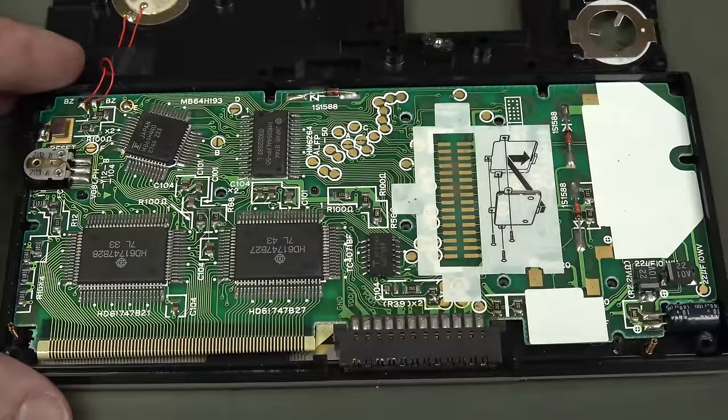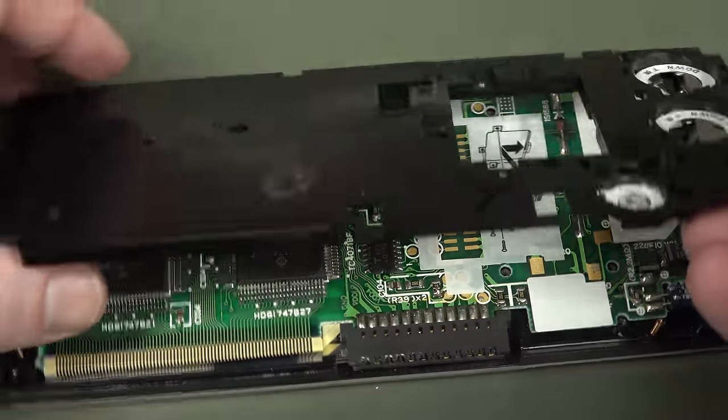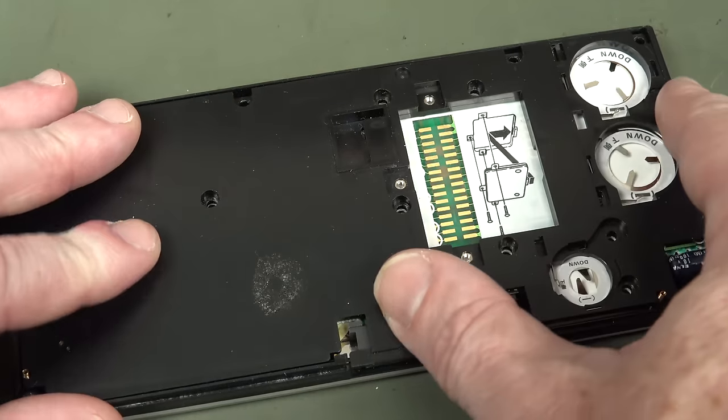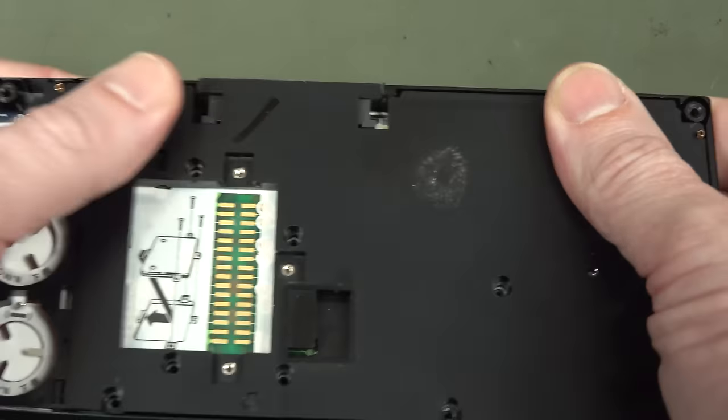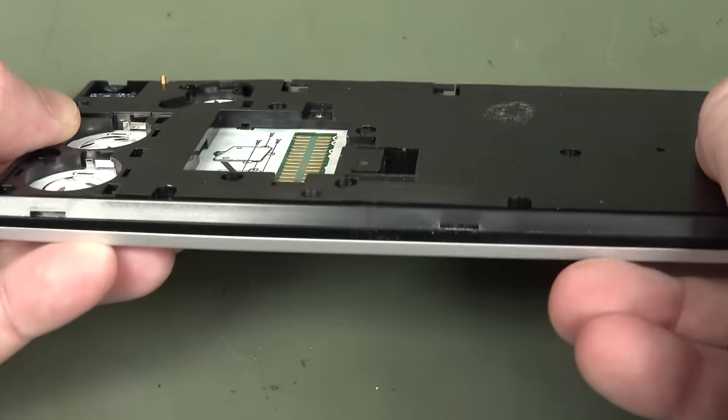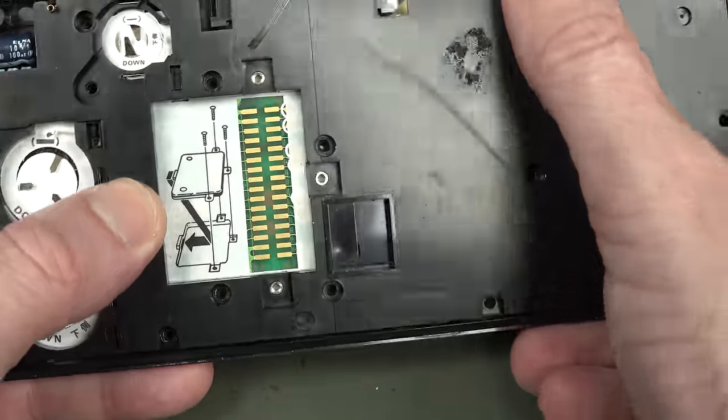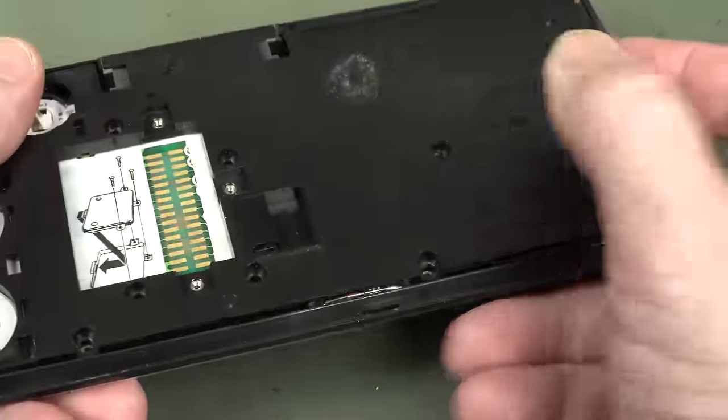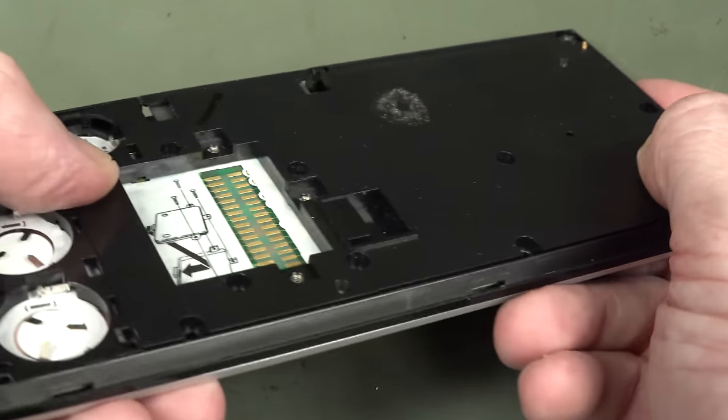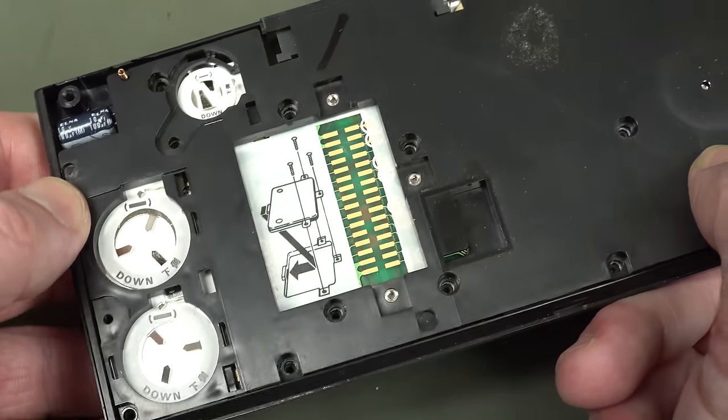There you go. Standard Casio calculator construction for the time. Nothing fancy. Just standard fiberglass PCB and surface mount parts. All off-the-shelf stuff. No worries. About the only custom thing is the flat flex LCD and stuff like that. Unless they roll their own processor in there. But that could just be a mask processor or something like that. We're not sure.